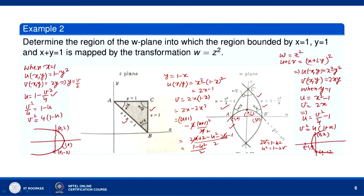So u = 1 - v²/4 is the image of x = 1, u = v²/4 - 1 is the image of y = 1, and v = (1 - u²)/2 is the image of x + y = 1. The angle between x = 1 and y = 1 is π/2. Let us verify that the angle between their images at their intersection point is also π/2 by finding the slopes of the tangents.